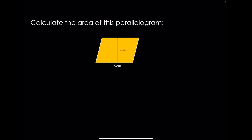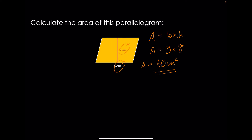What about this parallelogram? Area of a parallelogram is base times height, so that means it's 5 times 8, which gives 40 centimetres squared. Our units are centimetres, which you can't forget, and it's squared because it's area.